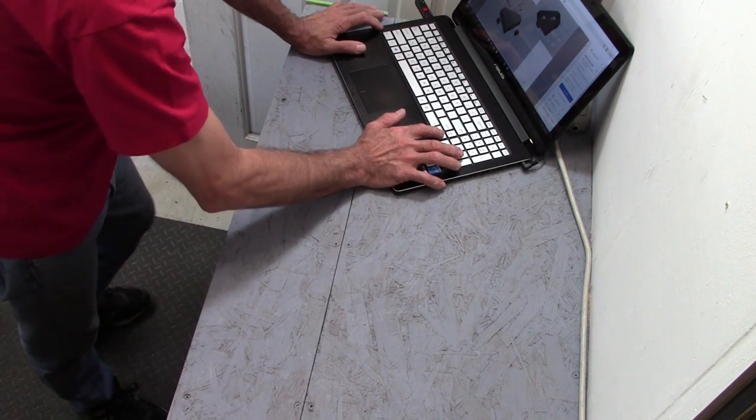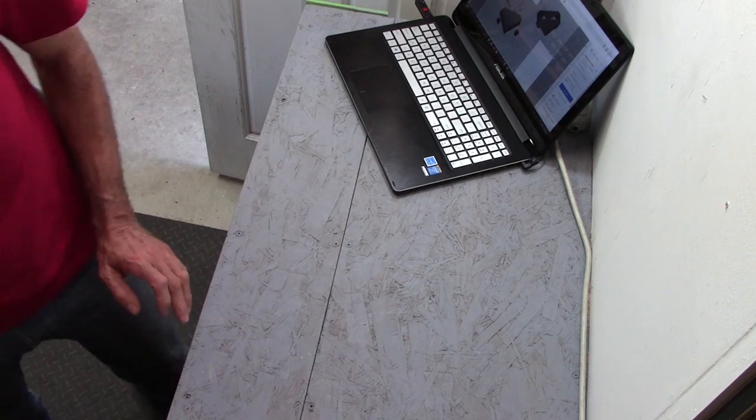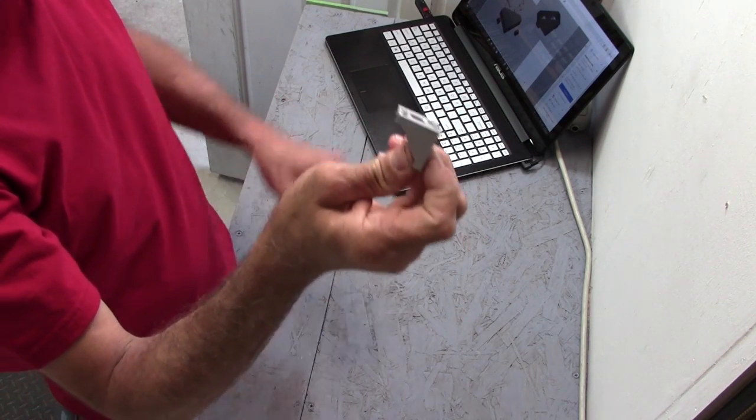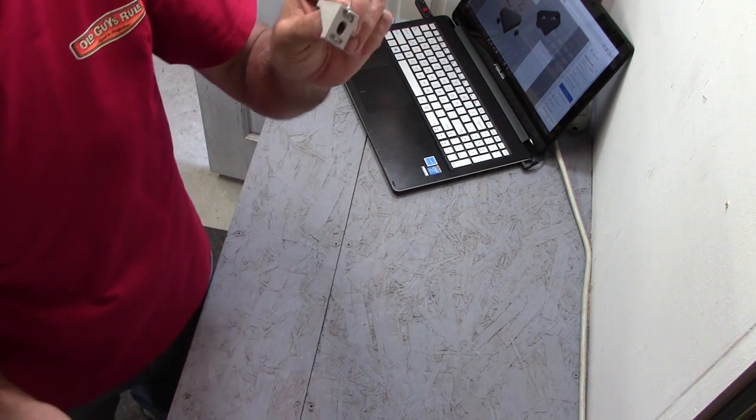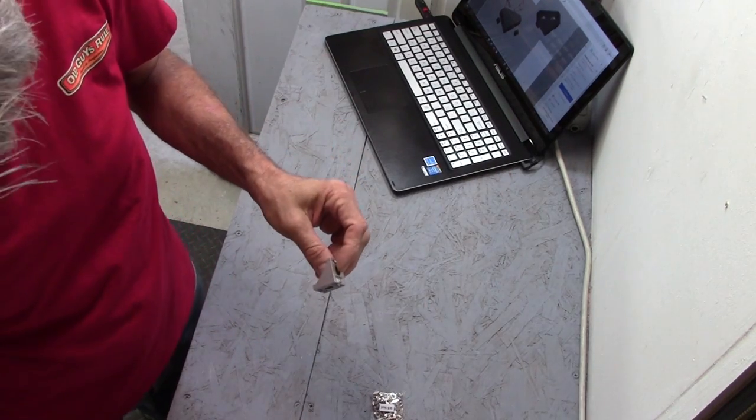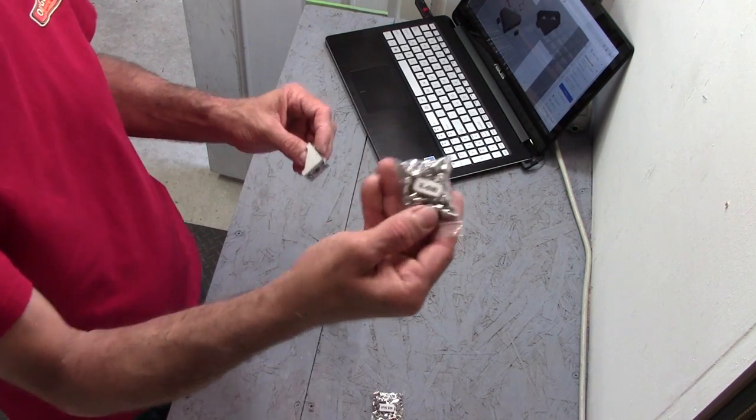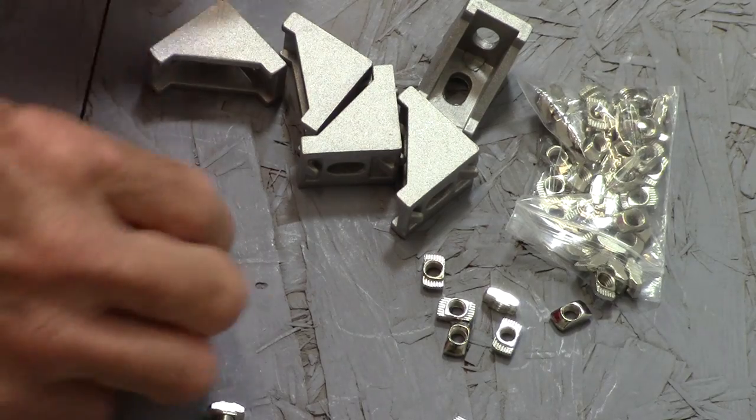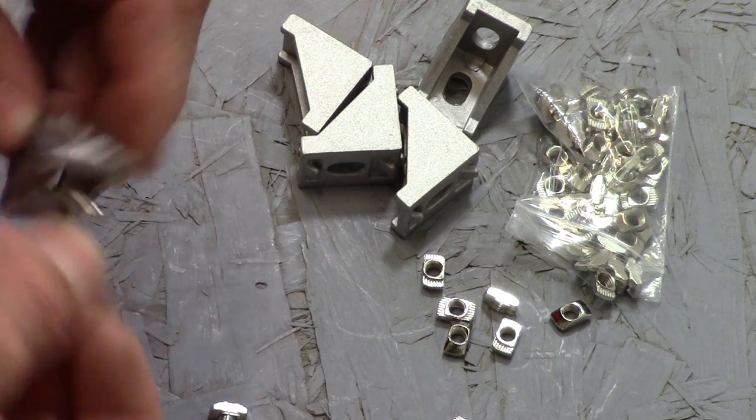All right, so my first instruction here is to put together these little corner piece guys. They've got a five millimeter bolt and then an M5 nut that goes in there. So the instructions are asking you to put these through the holes on each one of these, but they tend to just fall right back out.